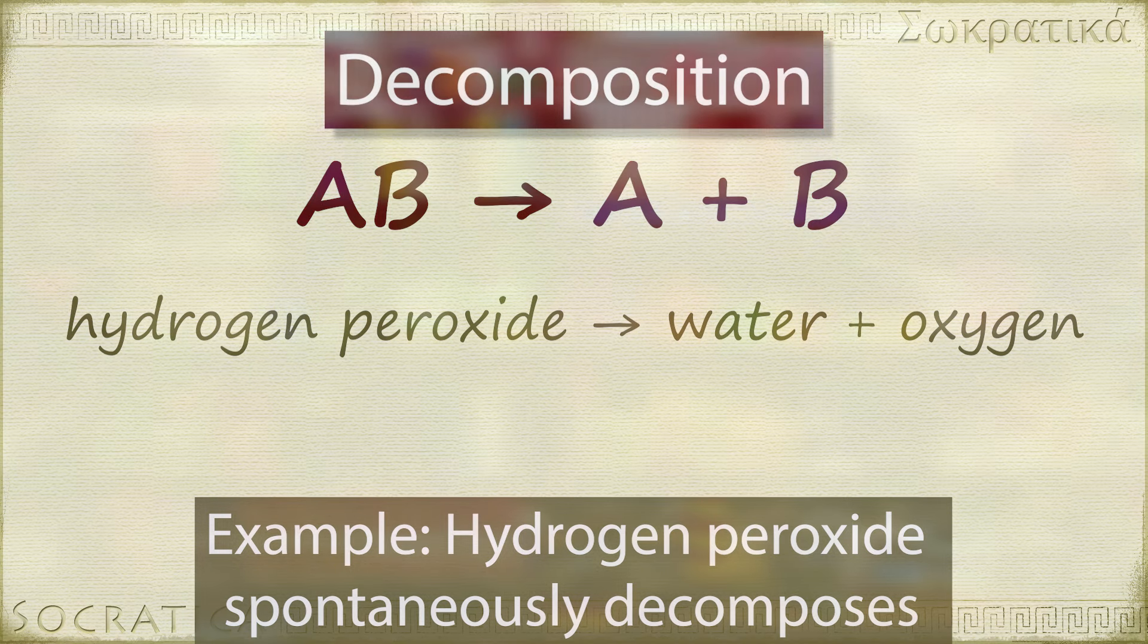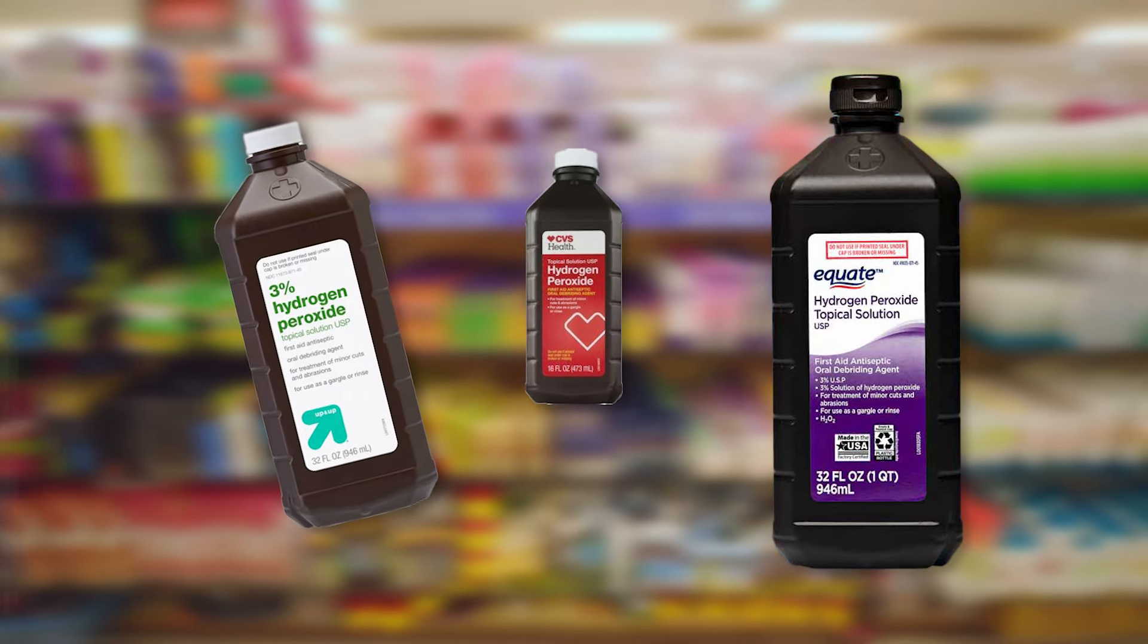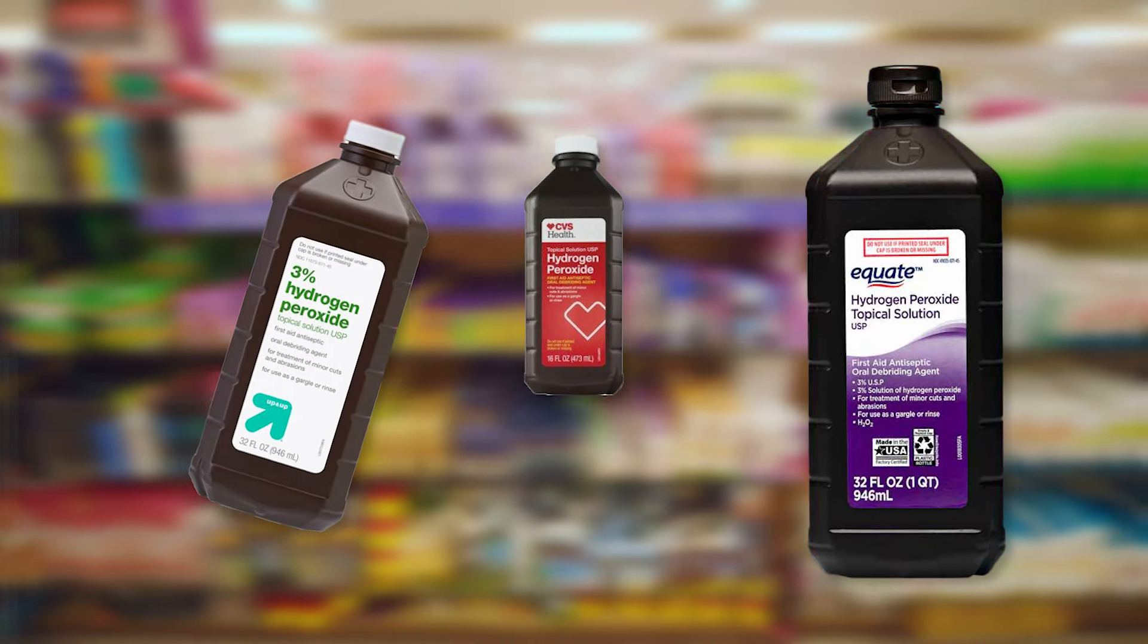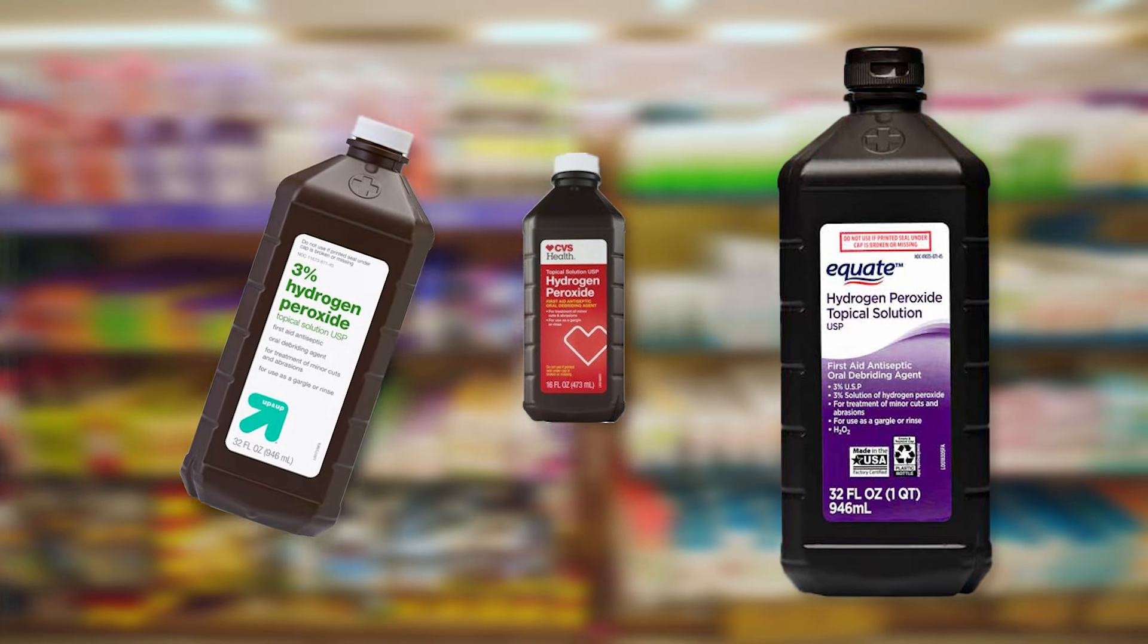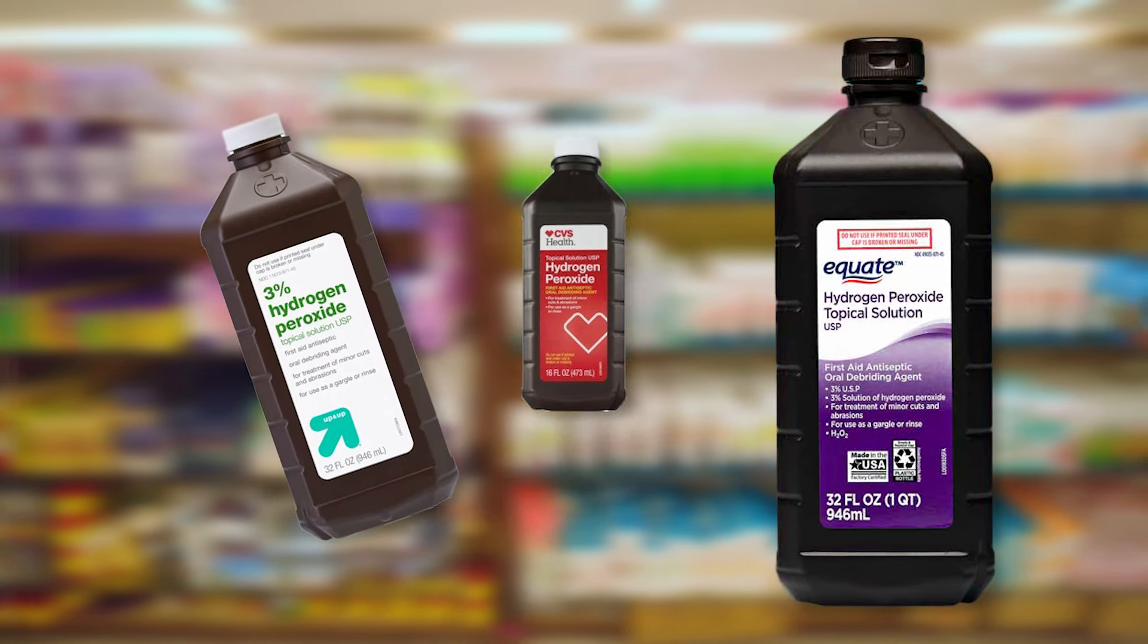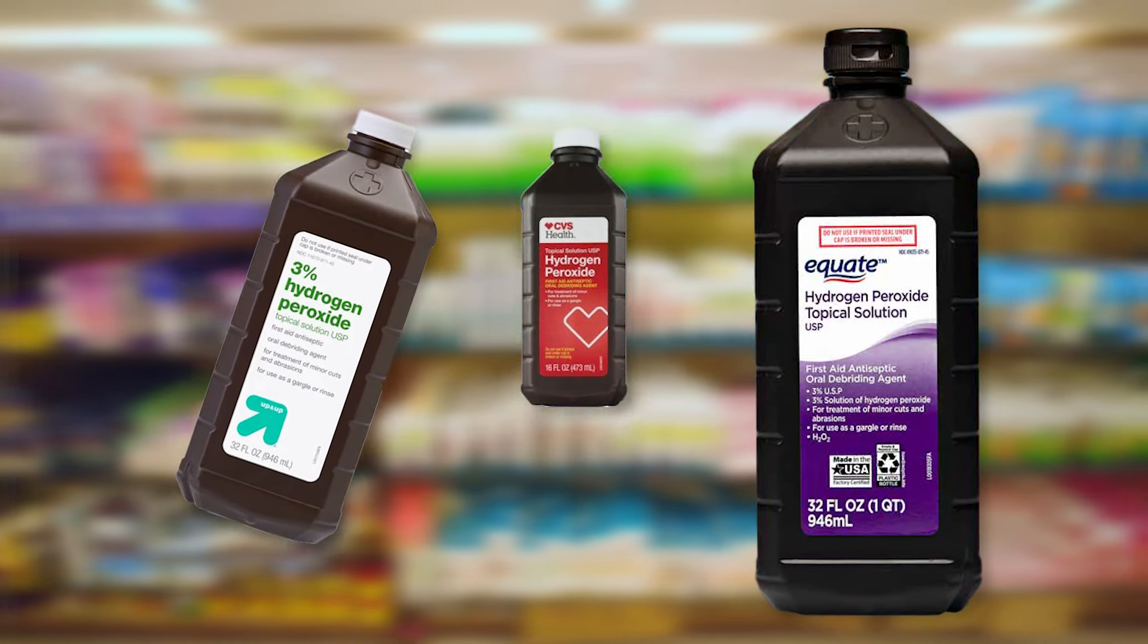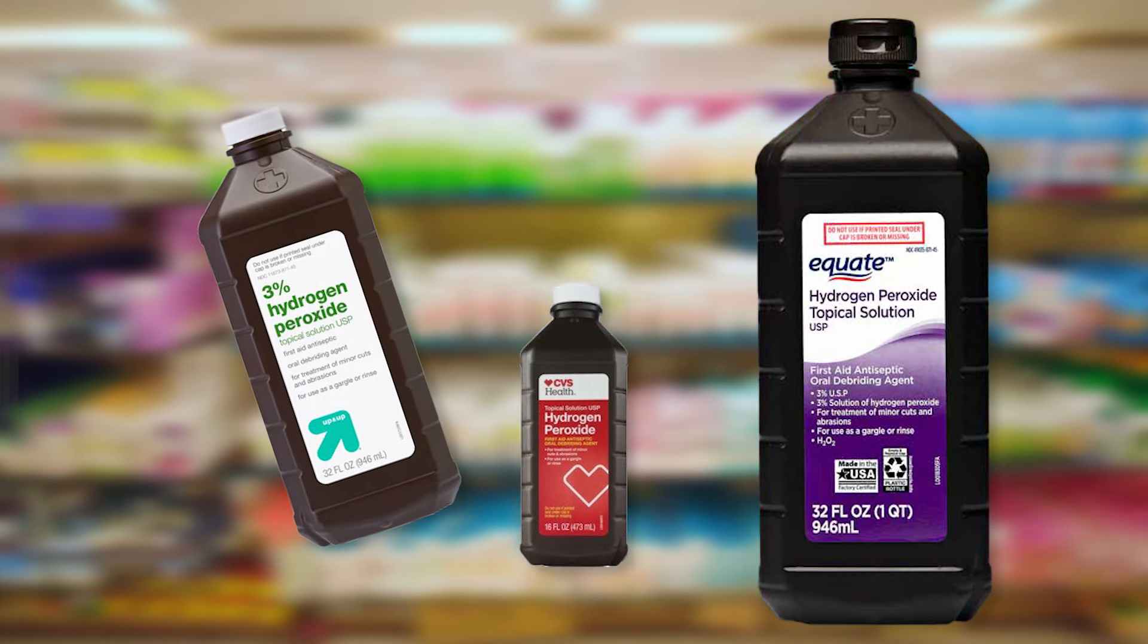That's why hydrogen peroxide comes in dark brown bottles. When you buy a bottle of hydrogen peroxide at the store, you'd like to be actually buying hydrogen peroxide, and not just a bottle of water. If your hydrogen peroxide has been sitting in your medicine cabinet for a few years, it's probably time to replace it.